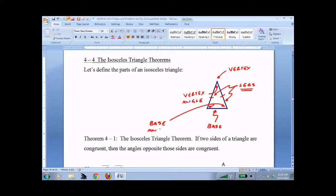This is called the base. And these are called the base angles. So now when I talk about an isosceles triangle, we'll all be on the same page. Base, base angles, legs, vertex, and vertex angle.